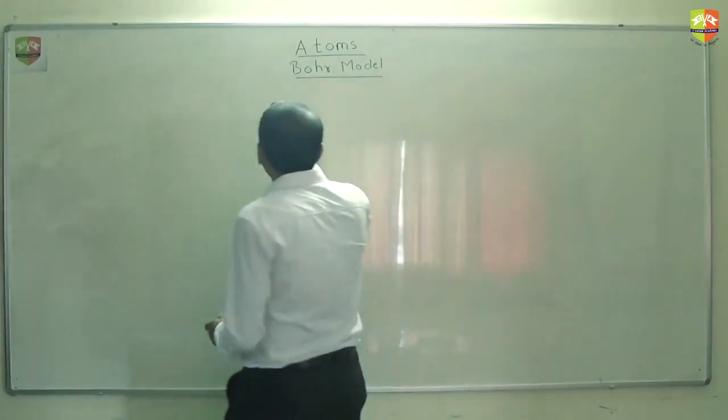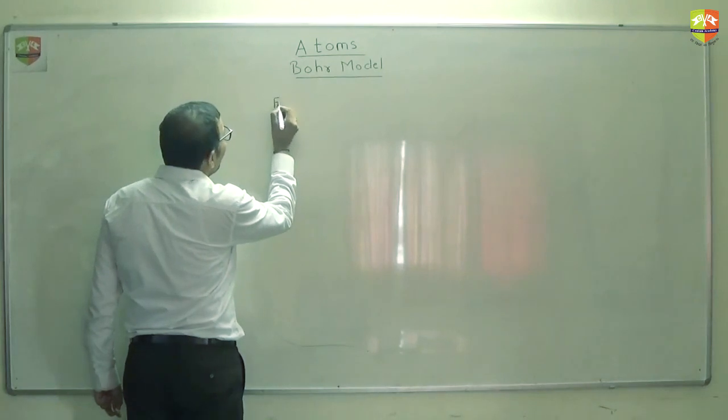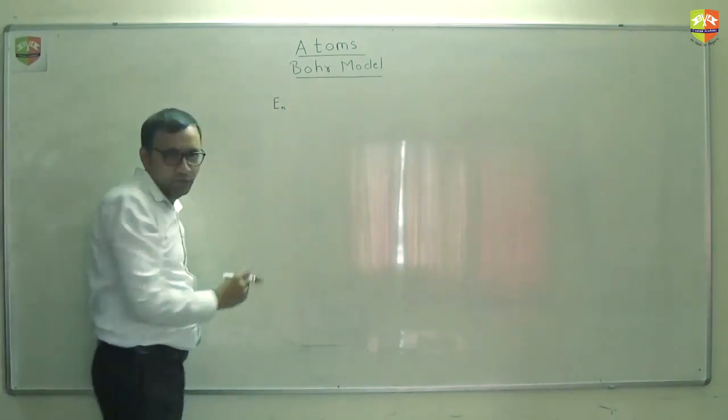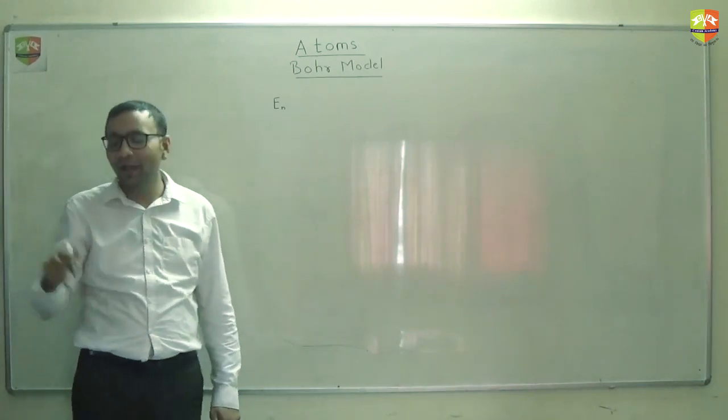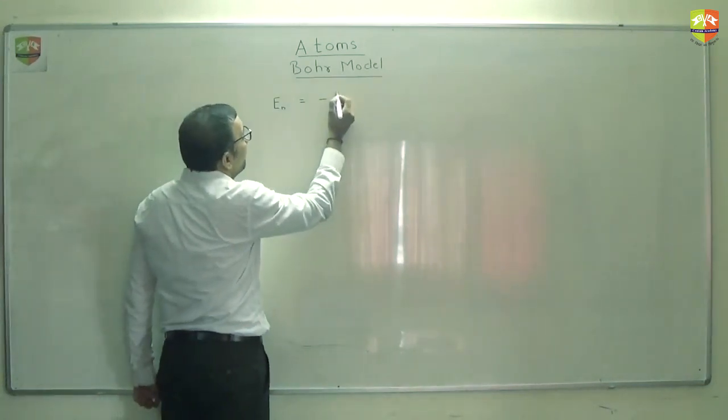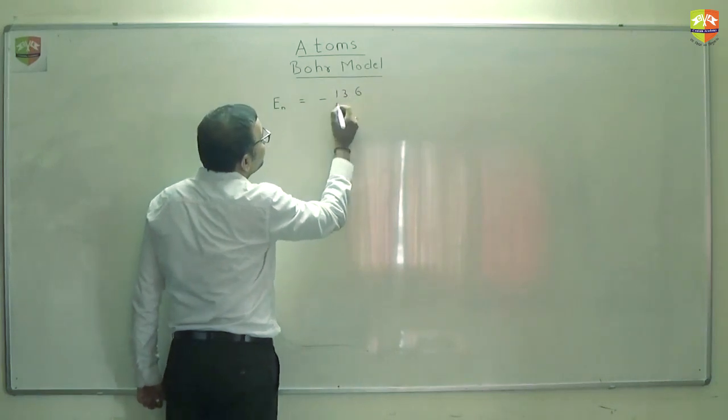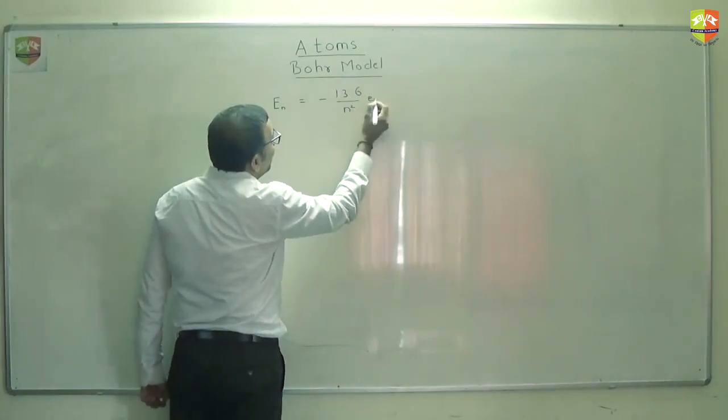Okay, so where were we? We found out energy in the nth orbit for the electron in hydrogen atom is minus 13.6 by n square electron volt.